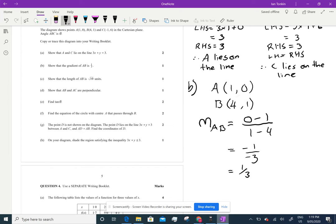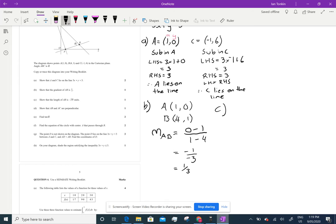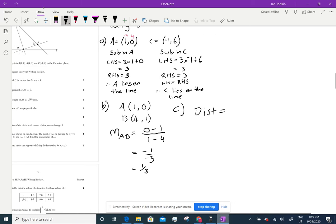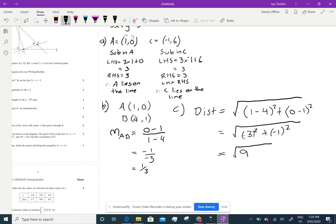Show that the length AB is 10 units. Here goes C. Again, I've got A and B there. And distance equals the square root. Subtract the x values. 1 minus 4 squared. And subtract the y values. 0 minus 1 squared. So, that gives me the square root. 1 minus 4 is negative 3 squared, plus negative 1 squared. And it's important to put those in brackets in your calculator. Otherwise, you'll get the wrong answer. Negative 3 squared is 9. Negative 1 squared is 1. Which is root 10, which is what we needed as required.